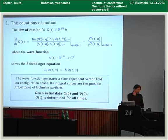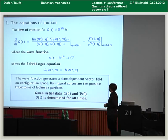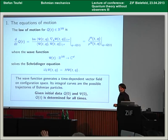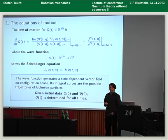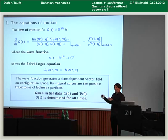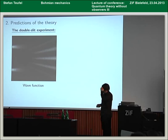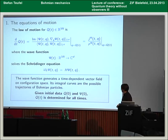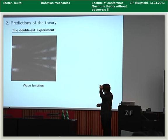Now we have to analyze the equations of motion and see what their empirical predictions are. The only freedom we have is to choose initial conditions. The rest of the talk will be about understanding the empirical predictions of the theory. I'll start with very simple, maybe even naive examples and hopefully get in the end to the final point.